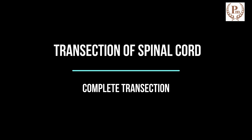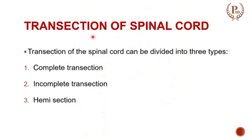Hello friends, let us study about the complete transection of spinal cord. Transection of the spinal cord can be divided into three types depending on the extent of the lesion: it can be complete transection, incomplete transection, or hemisection.